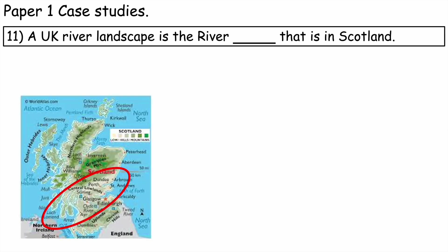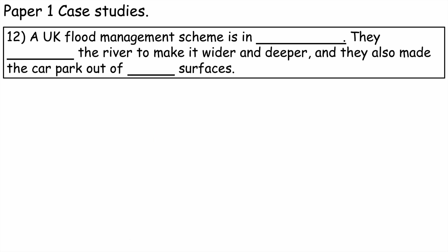Number eleven: a UK river landscape we can use is the River Clyde in Scotland. It has all the key features of river landforms — landforms of erosion such as waterfalls called the Falls of Clyde, landforms of erosion and deposition called the Medwin Meanders, and finally it flows through Glasgow into the sea at the Firth of Clyde. A UK flood management scheme we can use is Boscastle.